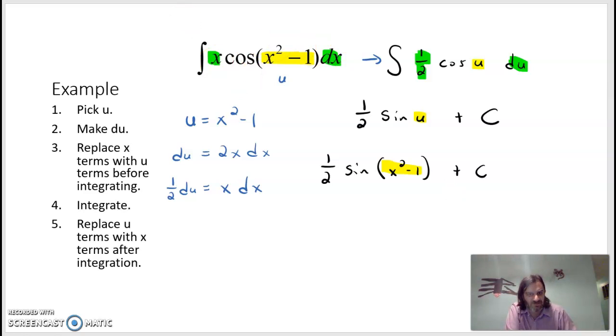So if you're having trouble following, we decided our u in the first step. Eventually we worked through a du. We substituted to make sure everything was in terms of u. We integrated. And then we went back to x. And generally it will not be that concise. The substitution lends itself to being quite lengthy in some places. But in some places we have very nice things to work out.